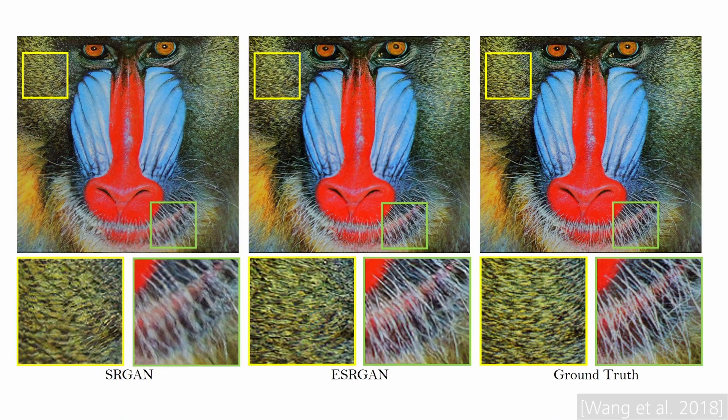For the image super-resolution task, the best results in recent years have been achieved by ESRGAN and Real-ESRGAN, among others. With an upscaling factor of 4 and based on a low-resolution input image, they can reconstruct even fine details like hair and fur with almost no perceptible difference to the original image. However, these approaches generally won't work well on videos, as each individual frame is scaled without regard to its neighboring frames and therefore generates artifacts such as flickering.